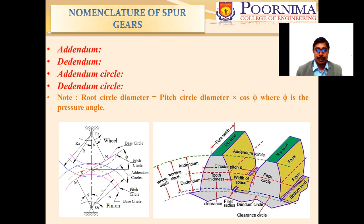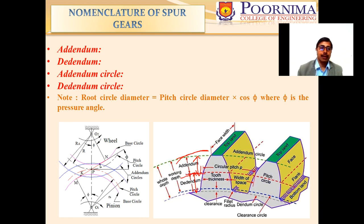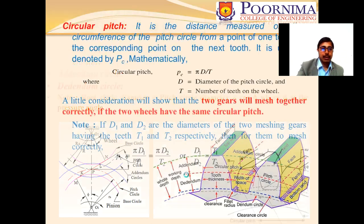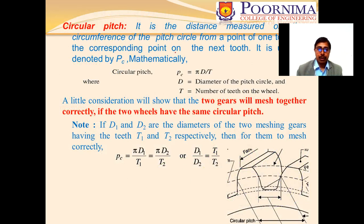The addendum is the radial distance of the tooth from the pitch circle to the top of the tooth. The dedendum is the radial distance from the pitch circle to the bottom of the tooth. Drawing circles from the center point gives us the pitch circle, the addendum circle, and the dedendum circle.